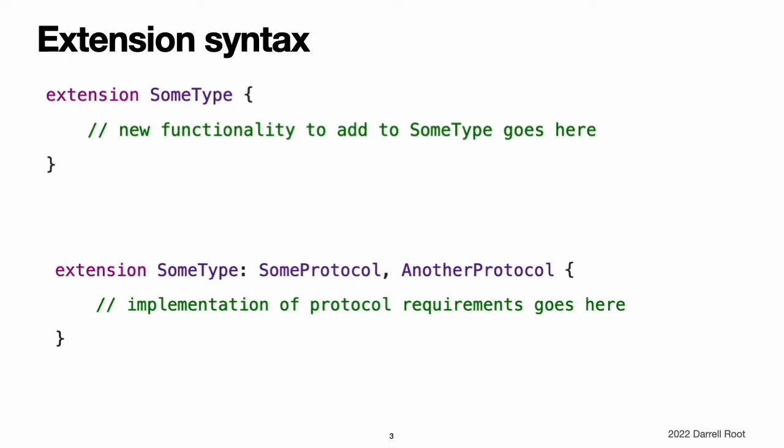Adding protocol conformance in this way is described in adding protocol conformance with an extension. An extension can be used to extend an existing generic type, as described in extending a generic type. You can also extend a generic type to conditionally add functionality, as described in extensions with the generic where clause.